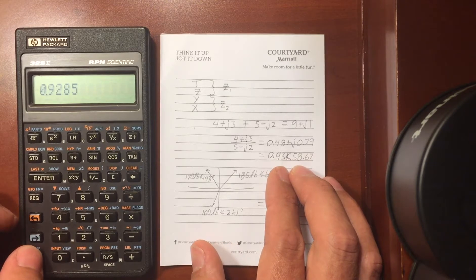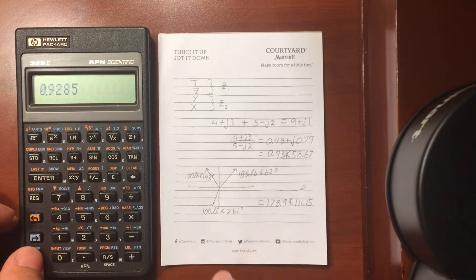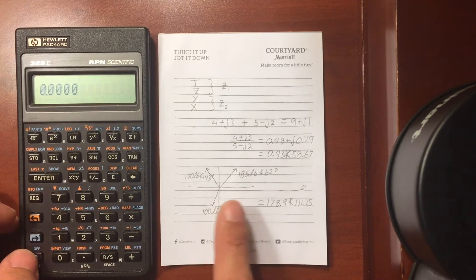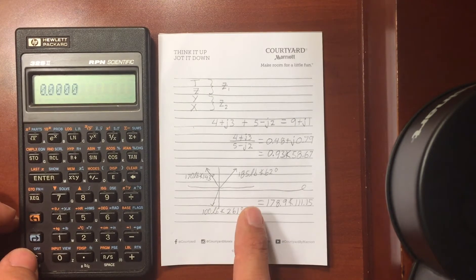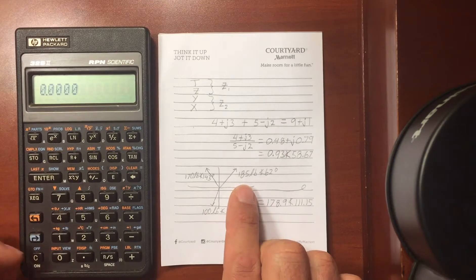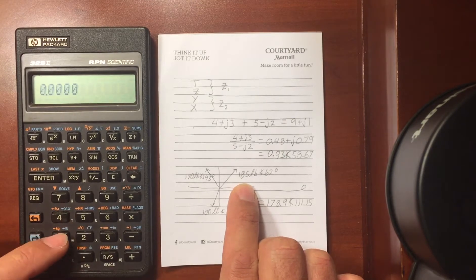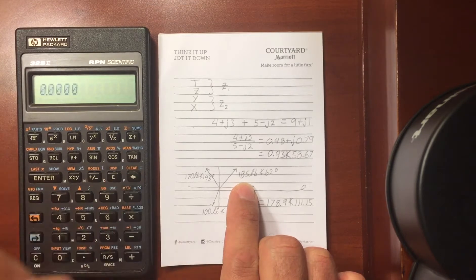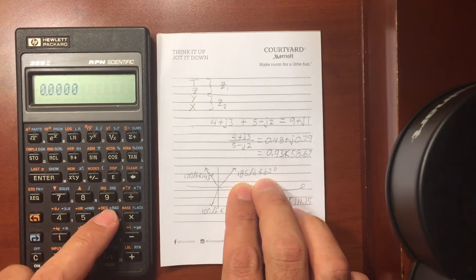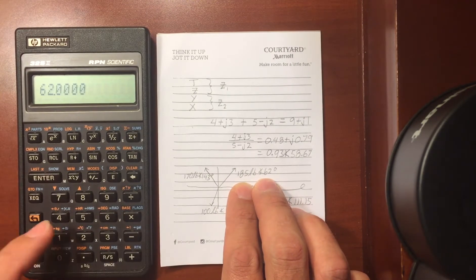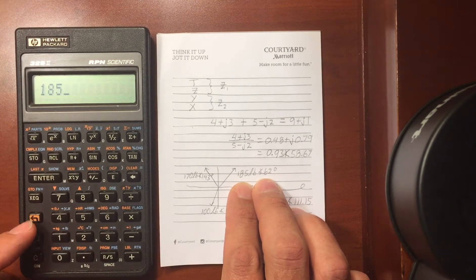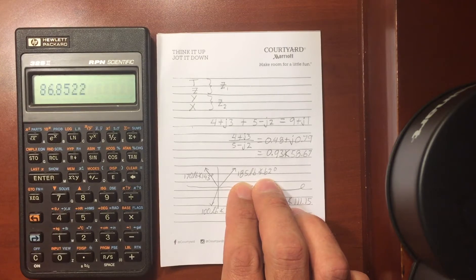I can also use complex numbers to add vectors. So here I've got a vector of different pounds, different forces. So I add in this first one, so I do the angle first, 62, and then do 185. Now I need to convert that into rectangular for the stack, so use the conversion to rectangular.